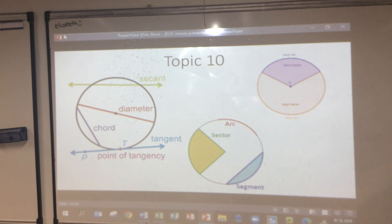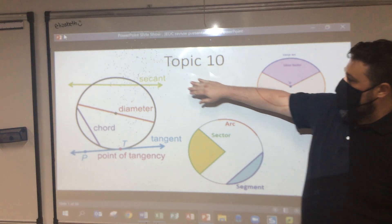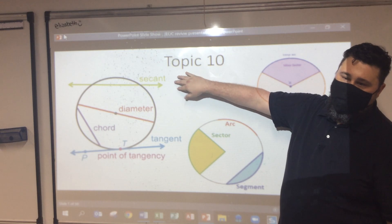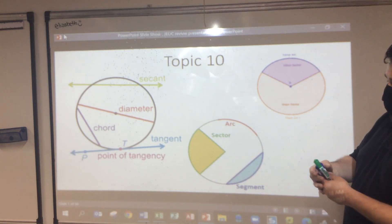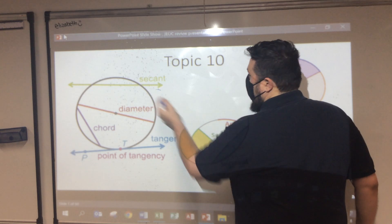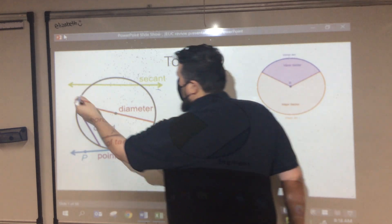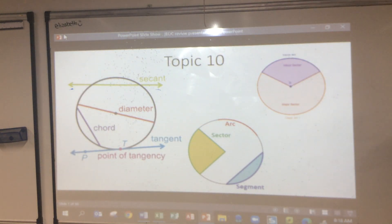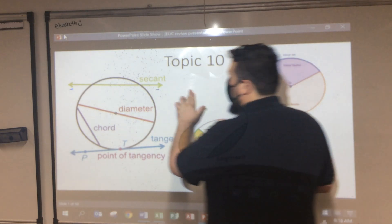Would you call this a secant, ray, line segment, or line? We have to start by looking at how it's expressed with the end points. What does that show us — is it a line segment or a ray? It's a line, right? Because it just continues in both directions.